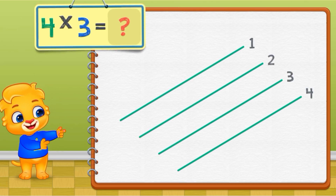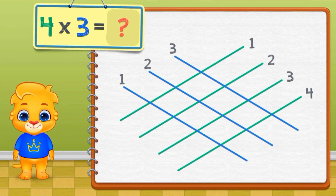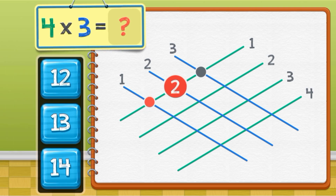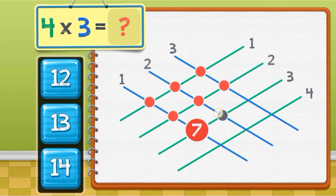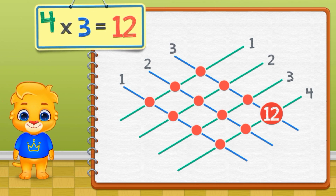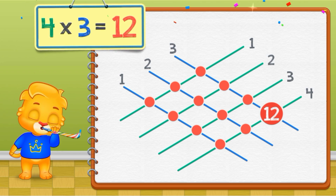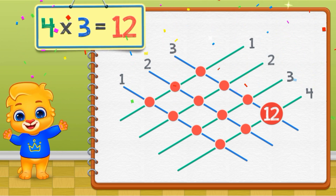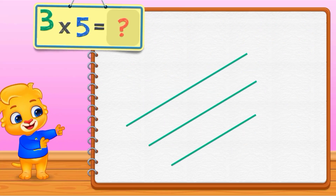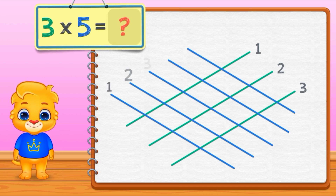4 times 3 equals 1, 2, 3, 4, 5, 6, 7, 8, 9, 10, 11, 12. 4 times 3 equals 12. 3 times 5 equals...